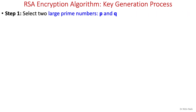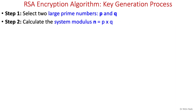In step one, we select two large prime numbers p and q. It is very crucial for RSA security that two very large prime numbers be generated that are quite far apart. Using these two large prime numbers, in step two, we calculate the system modulus n, which is p times q.